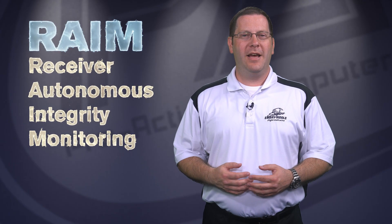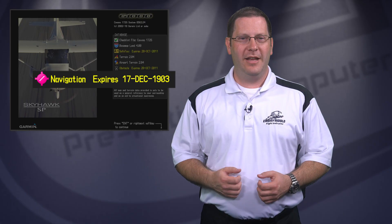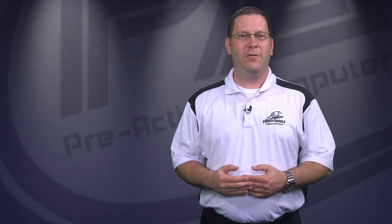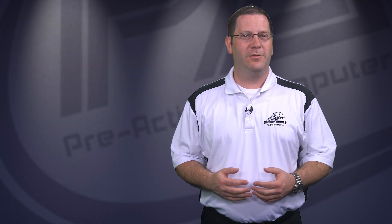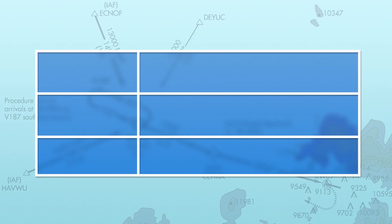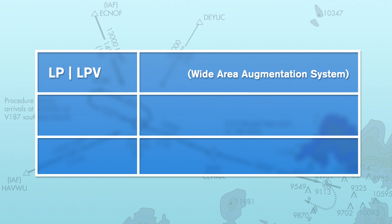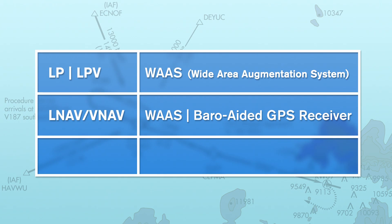At a minimum, you must have enough satellites for RAIM, and you must have an up-to-date navigation database. The GPS receiver in the aircraft will always automatically select the most precise approach available. LP and LPV approaches require support of the Wide Area Augmentation System or WAAS. LNAV/VNAV requires WAAS or baro-aided GPS receivers, and LNAV only requires a standard GPS signal with RAIM.